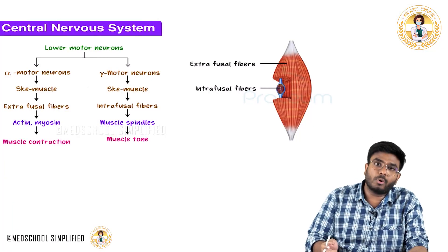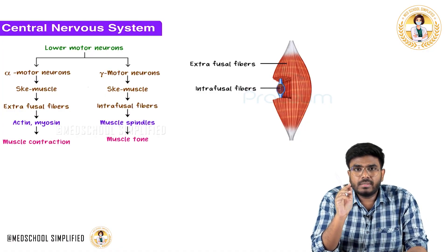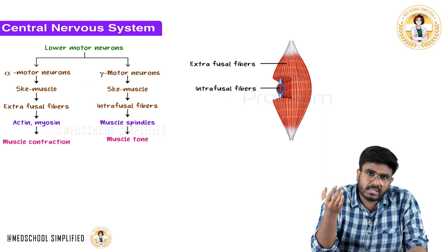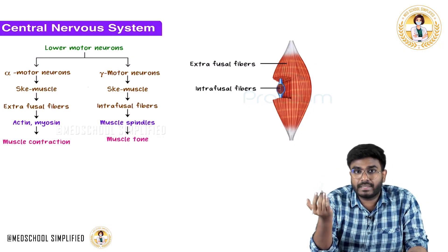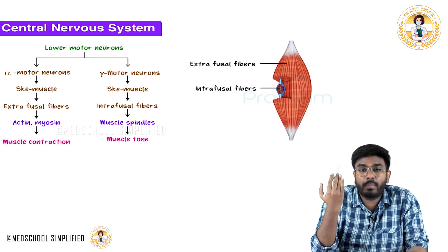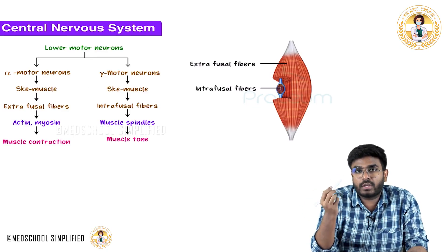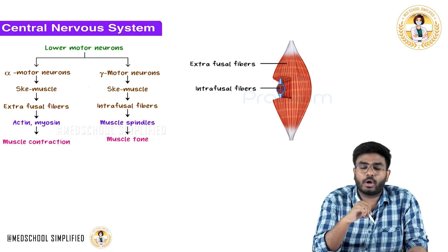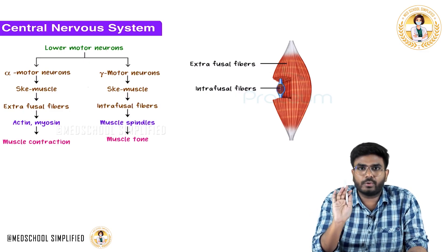Welcome back. Let's discuss lower motor neurons. Upper motor neurons originate from the brain — either from the cortex or from the brainstem nuclei. Based on where they originate, we divide the descending pathways into two types: corticospinal tracts, which originate in the cortex, and extrapyramidal tracts, which originate in the brainstem nuclei.